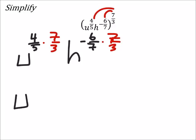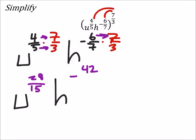So I would have u to the power of 4 times 7 is 28, 5 times 3 is 15. Then I'd have the h. Now this is going to be negative 6 times 7 is 42, 7 times 3 is 21.